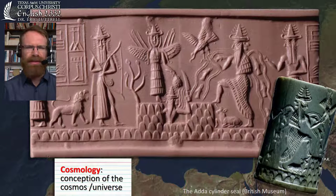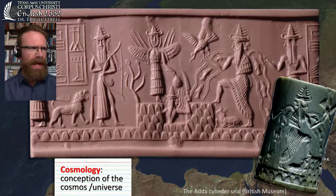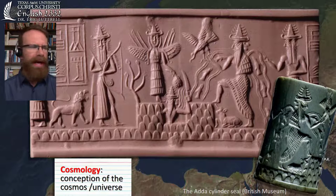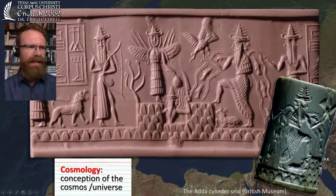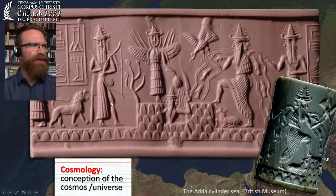The world of Atrahasis has an unusual cosmology. We can piece it together from things like the text, and also from cultural clues like visual representations of what the universe looked like. One example is the Ada Cylinder Seal, which has carvings of images in reverse. You take it and roll it in wet clay to see the image the way it's meant to look — it works like a stamp.